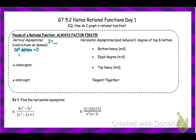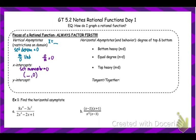Vertical asymptotes occur when you have a number divided by zero — that's undefined. When you have zero divided by a number, that gives you zero, which is why we set the top equal to zero to find our x-intercepts. X-intercepts occur when the top is equal to zero, and they should be written as coordinates — something comma zero. You could have more than one, or none at all.